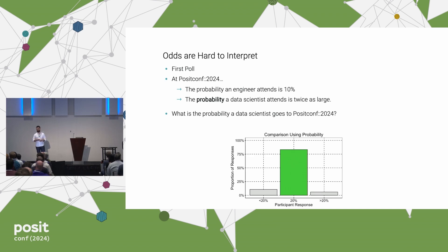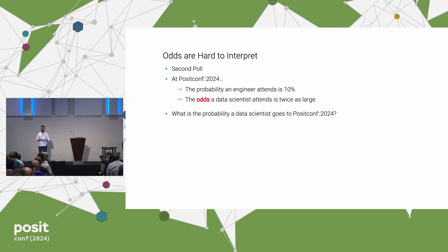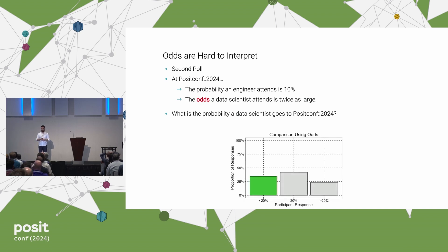I ran a second poll on that bird website. This time I changed the comparison to use odds — everything else remained the same. I said the odds a data scientist attends posit::conf are twice as large. Again I asked participants: what is the probability a data scientist goes to posit::conf? Now the answer looks very different. The correct answer, highlighted in green, is not selected the majority of the time. In fact, there's uncertainty as to what the answer should be — people are kind of spread out between three options.